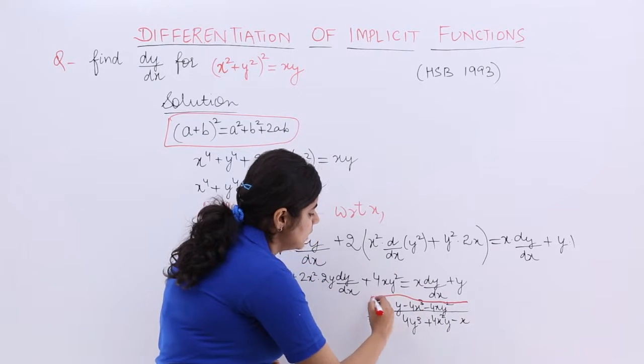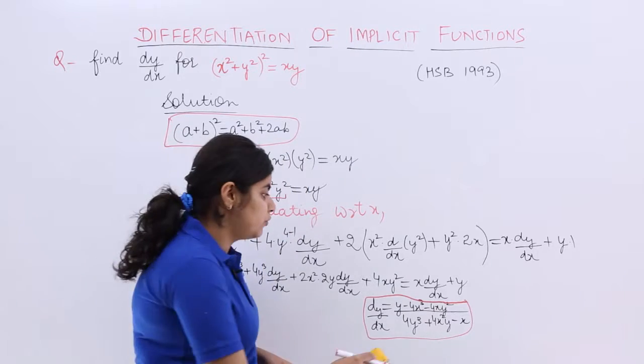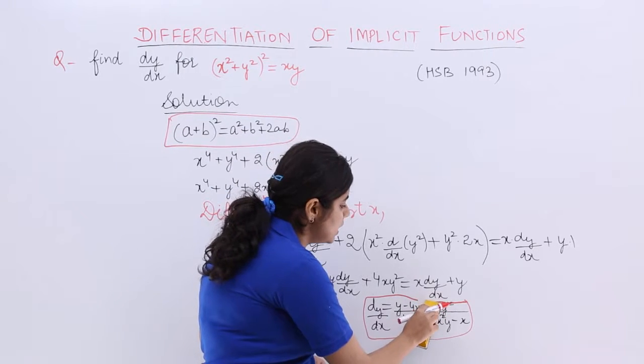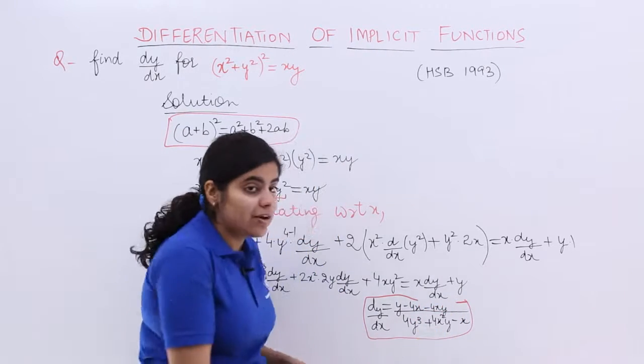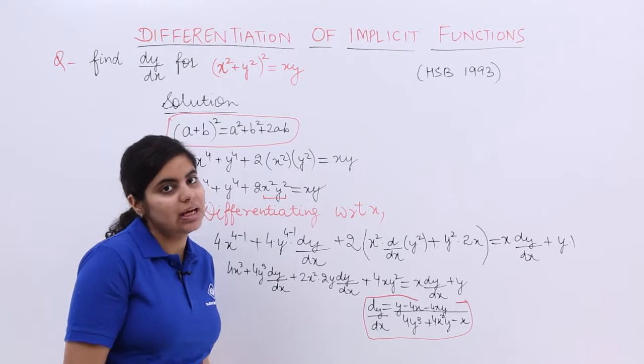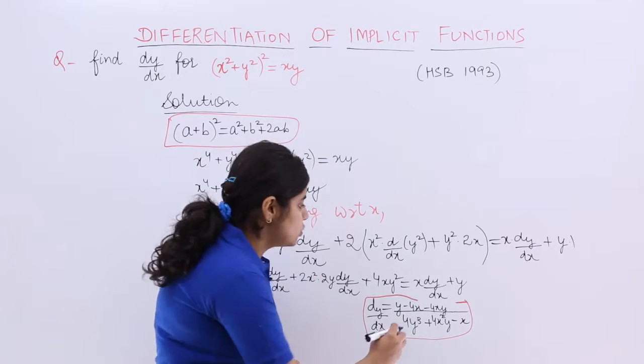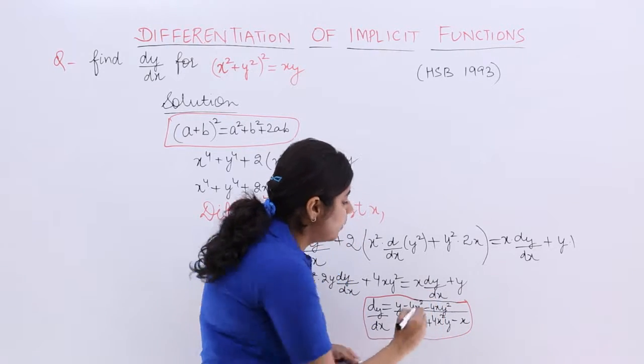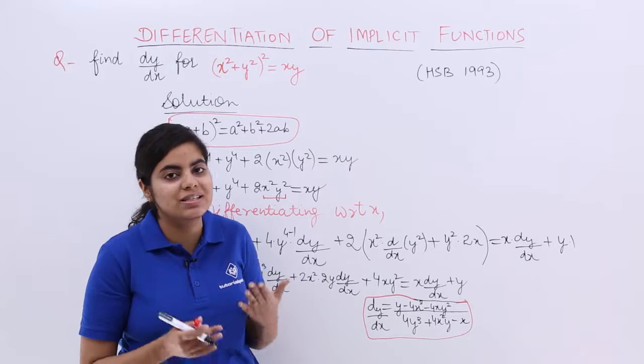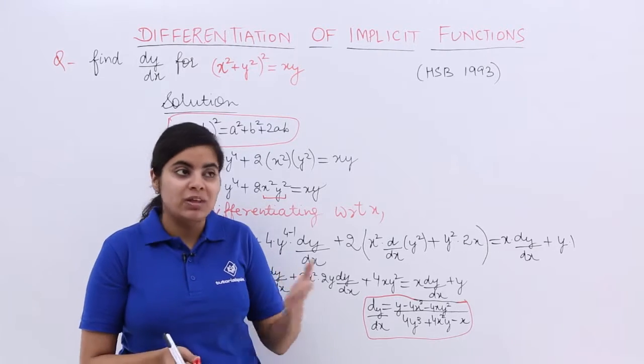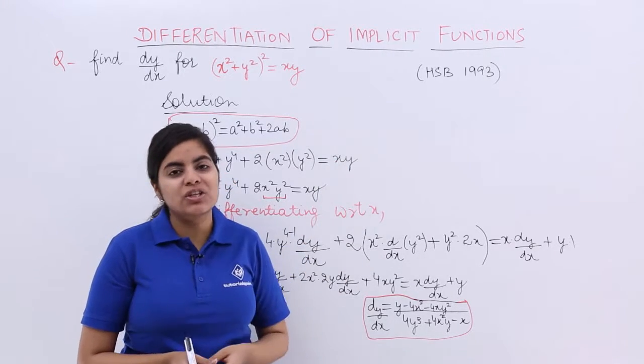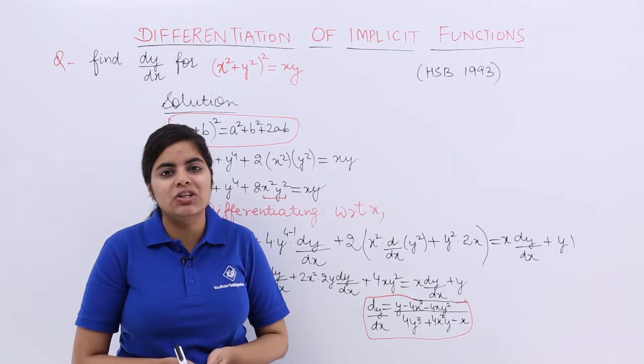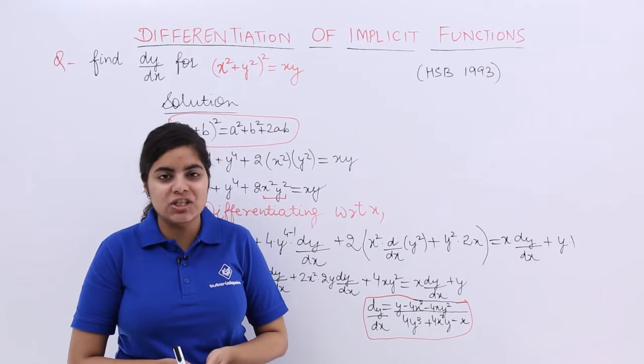One thing needs to be taken care. That always when you have implicit differentiation, you need to see to it that wherever the terms are shifted to the other side of equal to, please do not forget to write down the proper numbers and symbols. That means plus and minus sign should be taken care of. Rest everything is clear. The question is solved for the previous year examination of 1993 in HSB board.